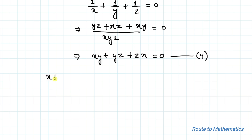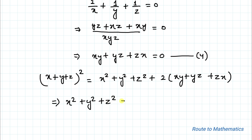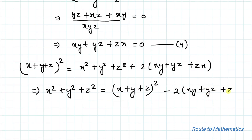We know an algebraic identity: (x + y + z)² = x² + y² + z² + 2(xy + yz + zx). So we can rearrange this as: x² + y² + z² = (x + y + z)² − 2(xy + yz + zx).